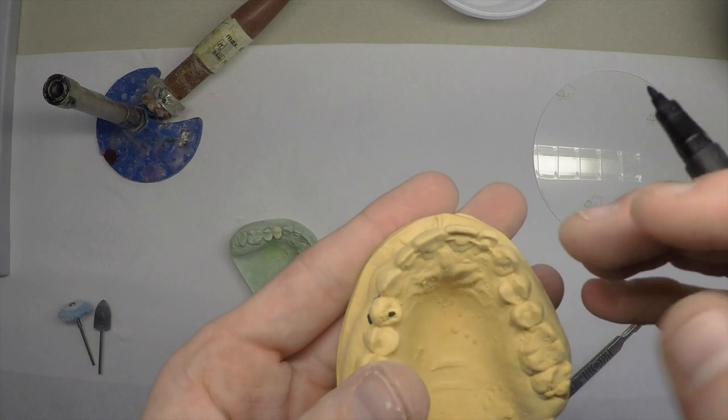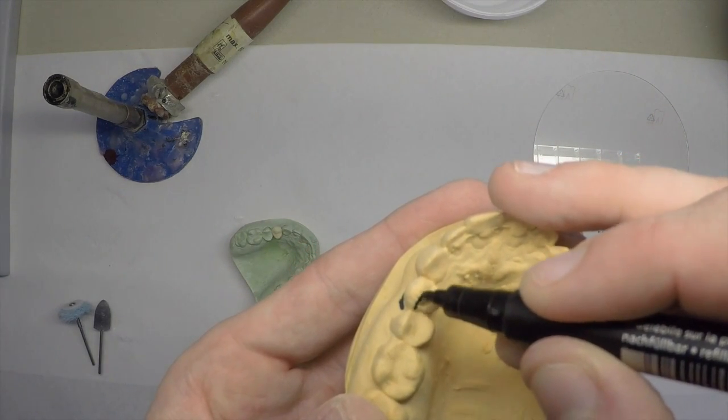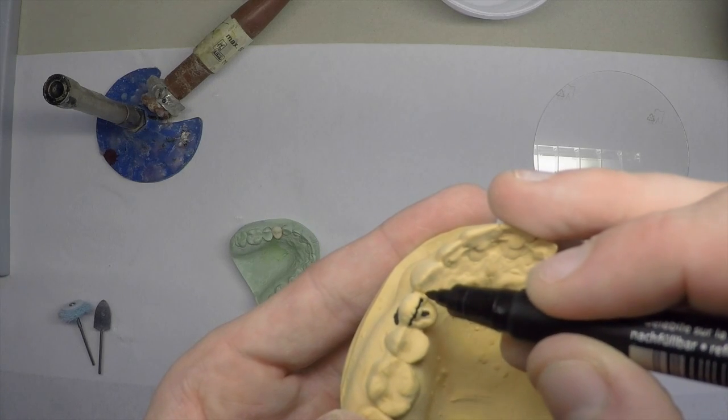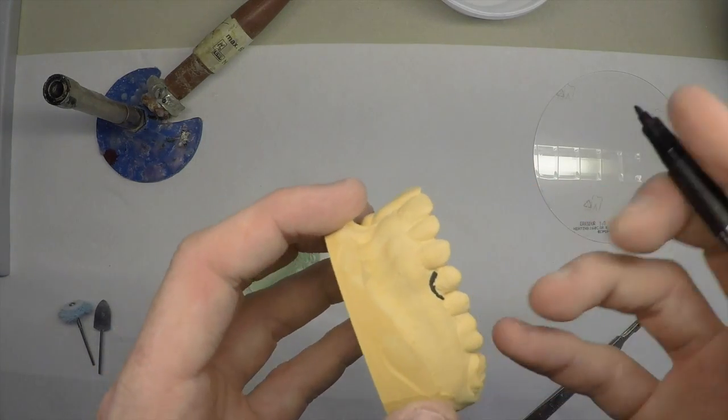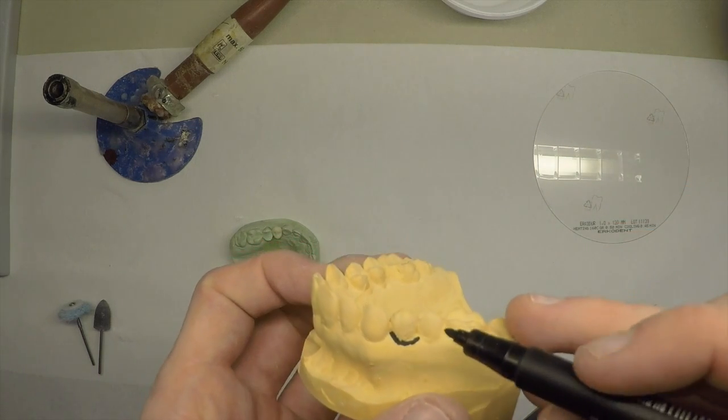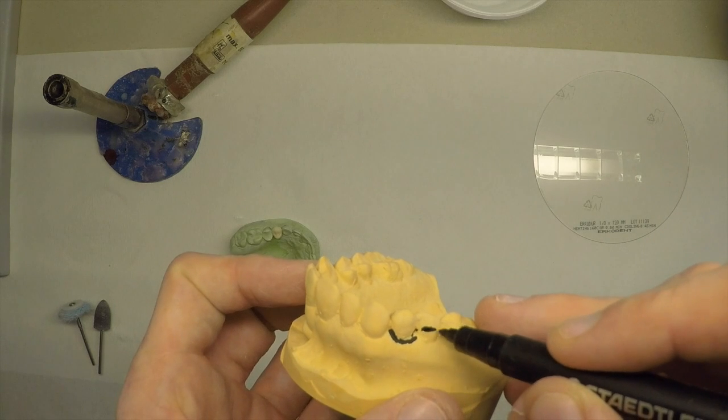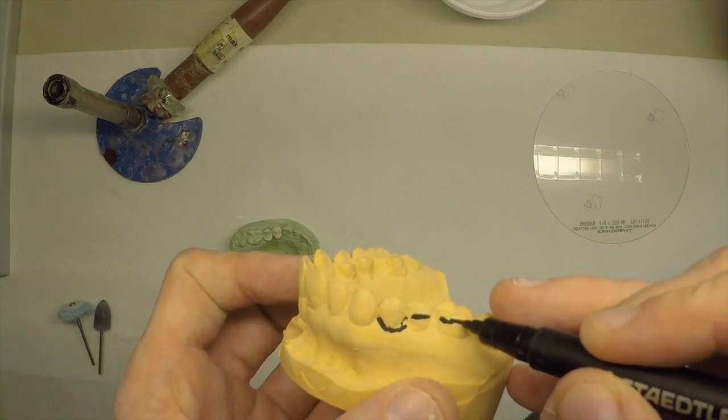Then we want to mark a line about a millimetre or two buckle to that. Then we want to mark lines where we want the rest of the tooth support of the stent is going to go. So we want to have it half tooth all the way around.